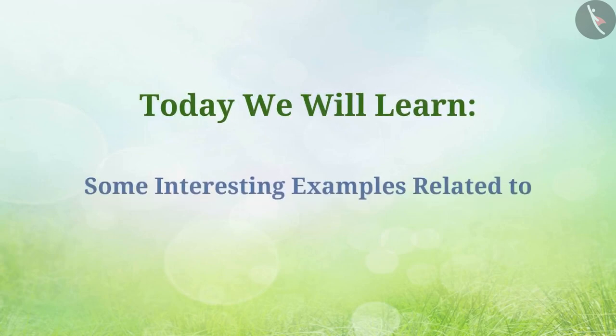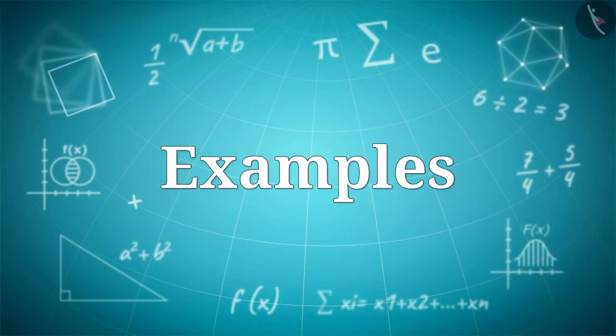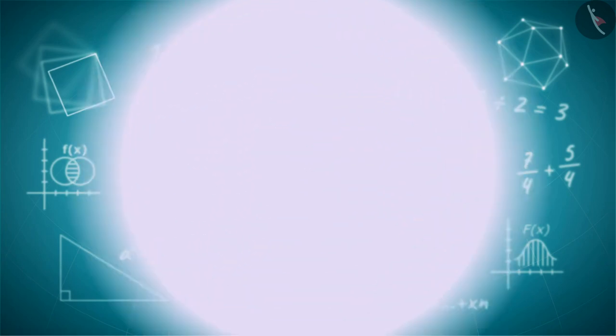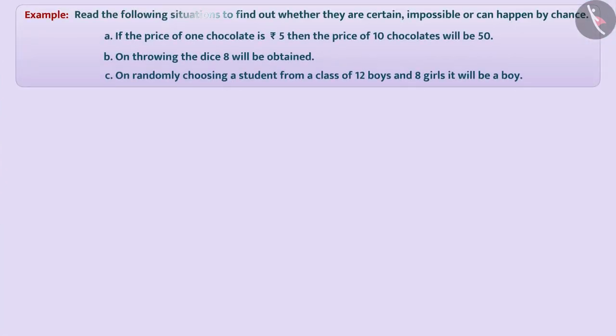Today we will learn some interesting examples related to chance and probability. Read the following situations to find out whether they are certain, impossible, or can happen by chance.